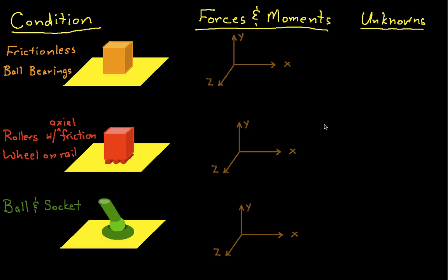The first case is a body resting on a frictionless surface. The question is: what kinds of forces or moments can the surface impose on the body? The only type of force it can apply is a normal force — the force that keeps the body from sinking through the surface. This force is normal to the plane, so if the plane is in the x and z axes, the normal force is in the y direction. The only unknown is the magnitude of the normal force.